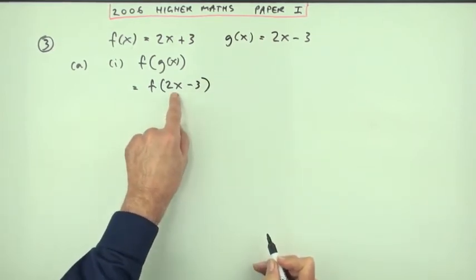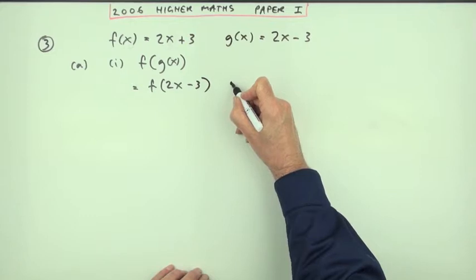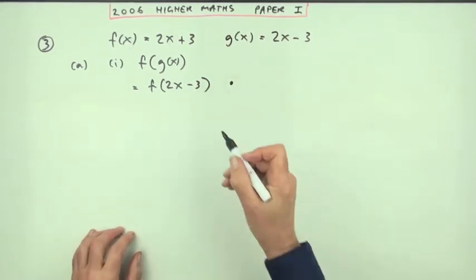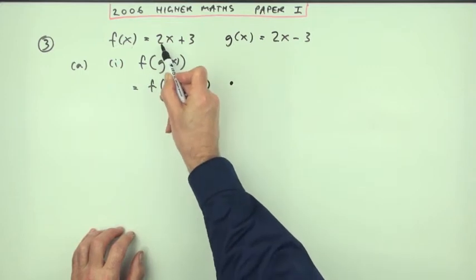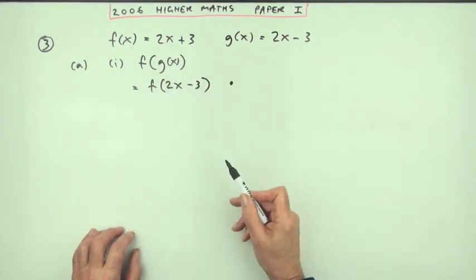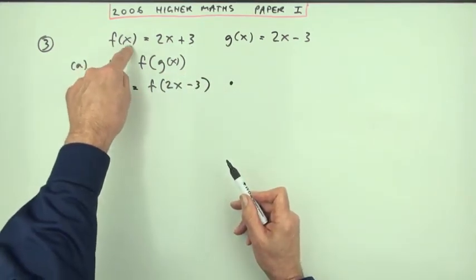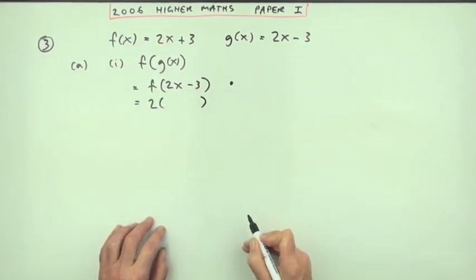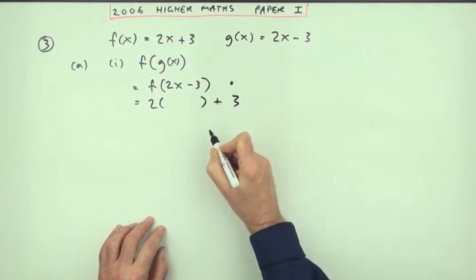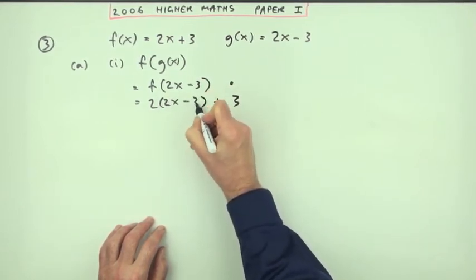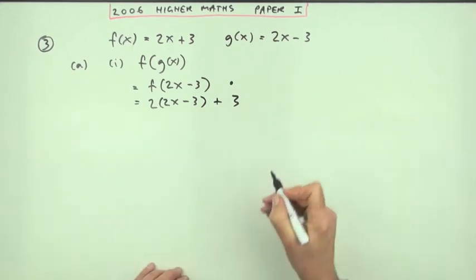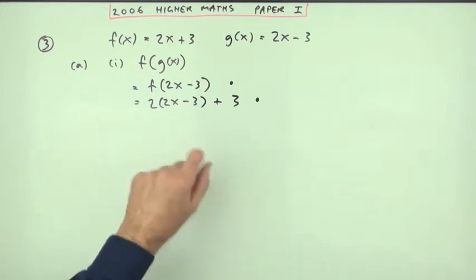And that's your first mark. For the second mark, all you have to do is just copy what it says it does. What does f do? Whatever you feed it, it'll double it. So if I give it this thing, it'll double it and then add three. And what was that thing? That was 2x minus 3. And as far as the marking scheme is concerned, that's sufficient for the second mark and the final answer for that part of part a.